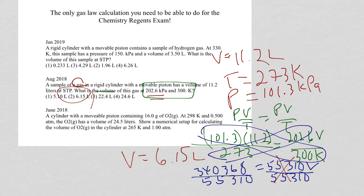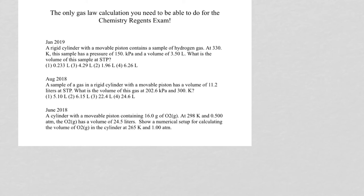The only gas law calculation, the only equation you're going to use is the combined gas law. Once again, let us erase the ink and check out 2016. I have a cylinder with a movable piston, 16 grams of O2 at 298 K, 0.5 ATM. The O2 has a volume of 24.5 liters. Show a numerical setup for calculating the volume of O2 in the cylinder at 265 K and 1 ATM. This is a short answer type question. The equation, remember, PV over T equals PV over T.